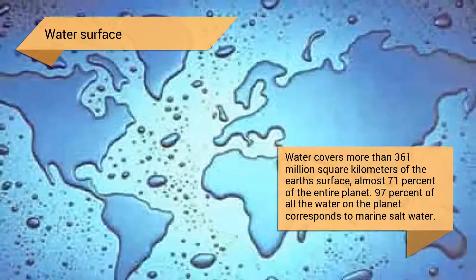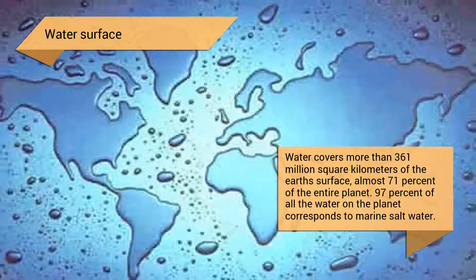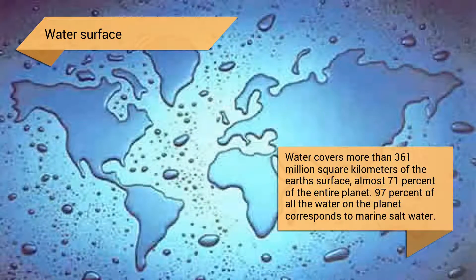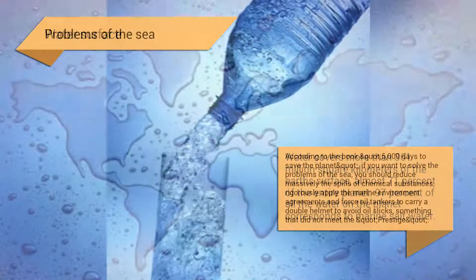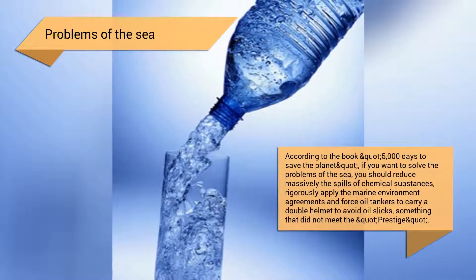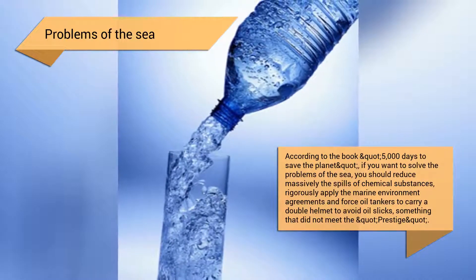Water covers more than 361 million square kilometers of the earth's surface, almost 71% of the entire planet. 97% of all the water on the planet corresponds to marine saltwater.